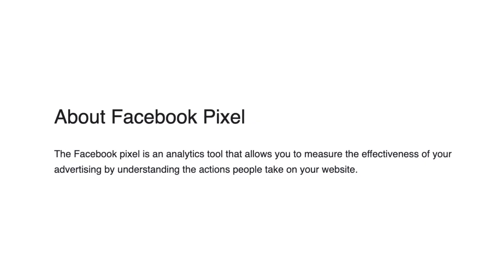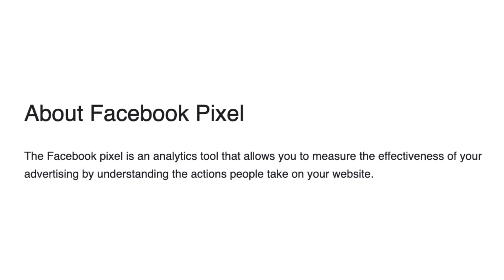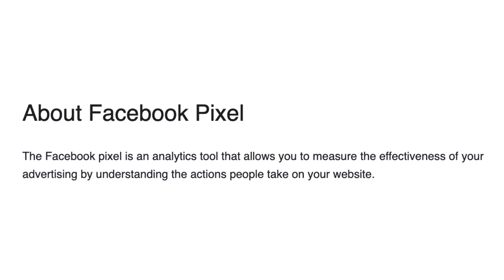So first let's cover what the Facebook Pixel even is. The Facebook Pixel is an analytics tool that allows you to measure the effectiveness of your advertising by understanding the actions people take on your website. In other words, it's a piece of unique code that Facebook gives you to install on your website, so whenever somebody lands on your website you're able to track them and see what they're actually doing. But it goes one step beyond that — it will actually give the code and information back to Facebook to allow you to retarget the people that visited your website while they're on Facebook. That is powerful.